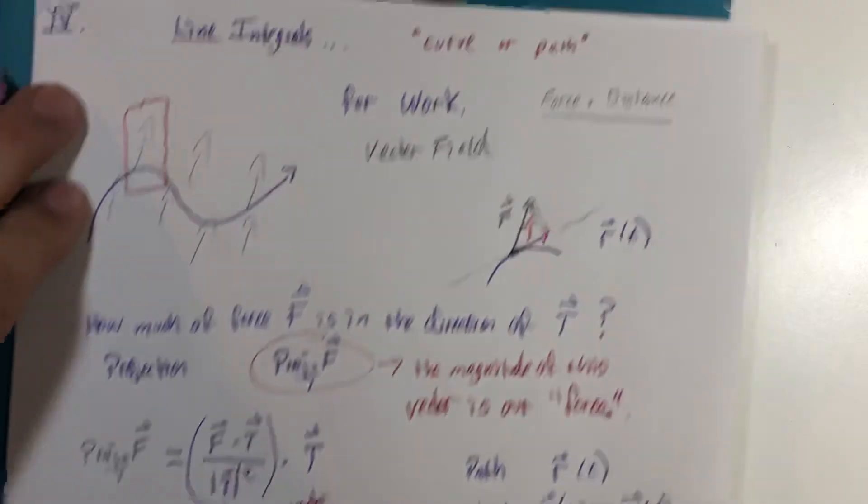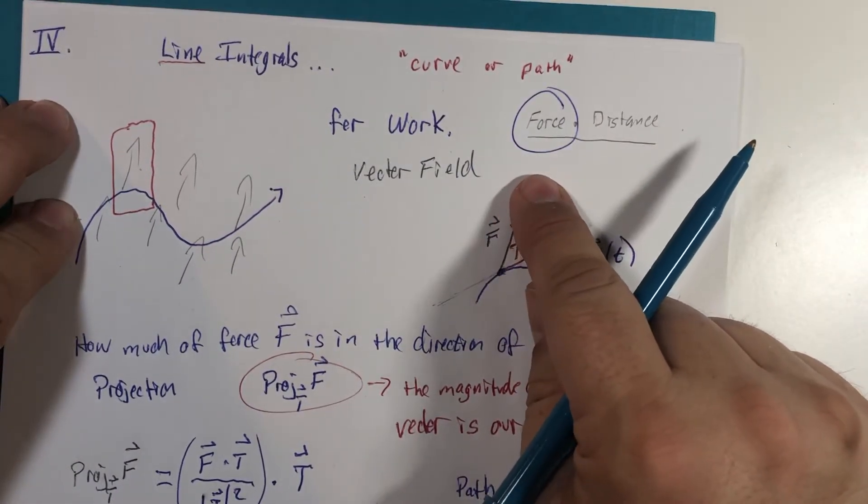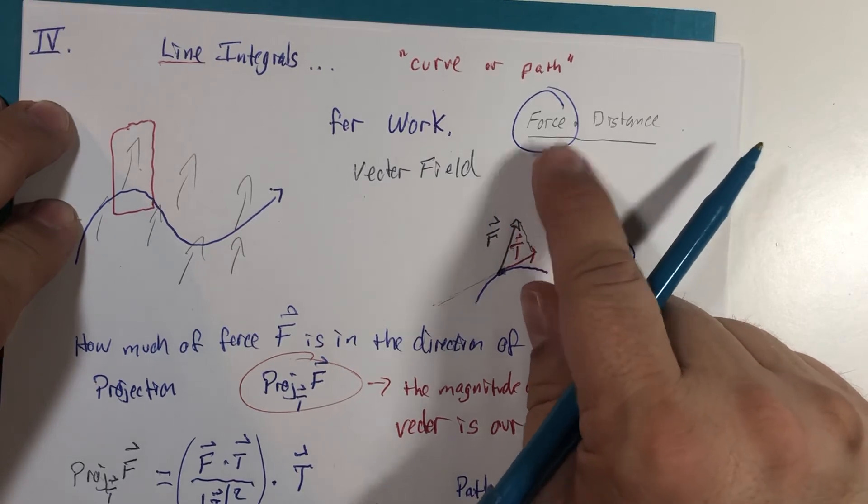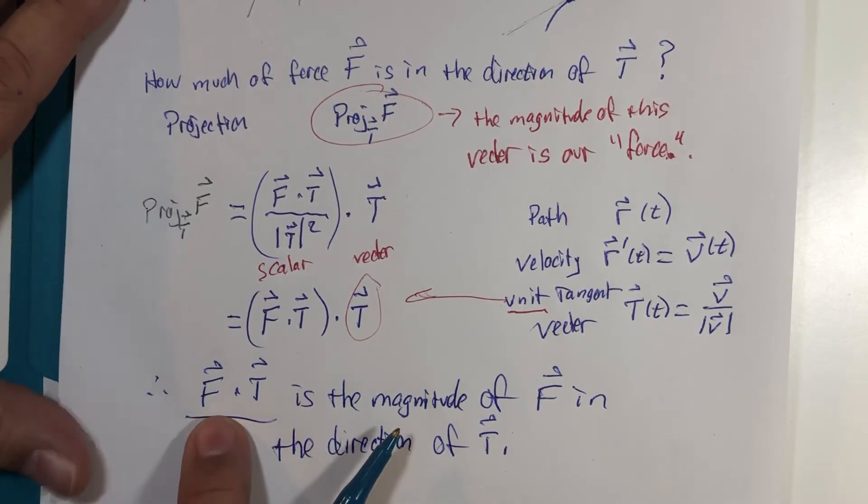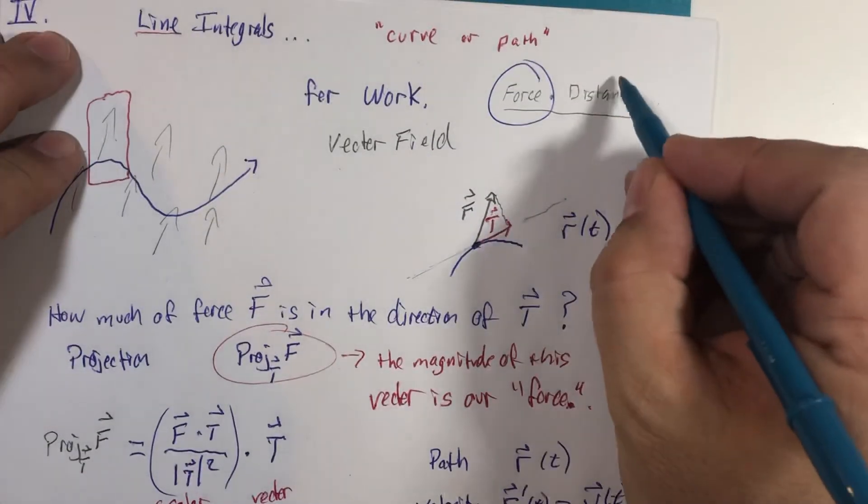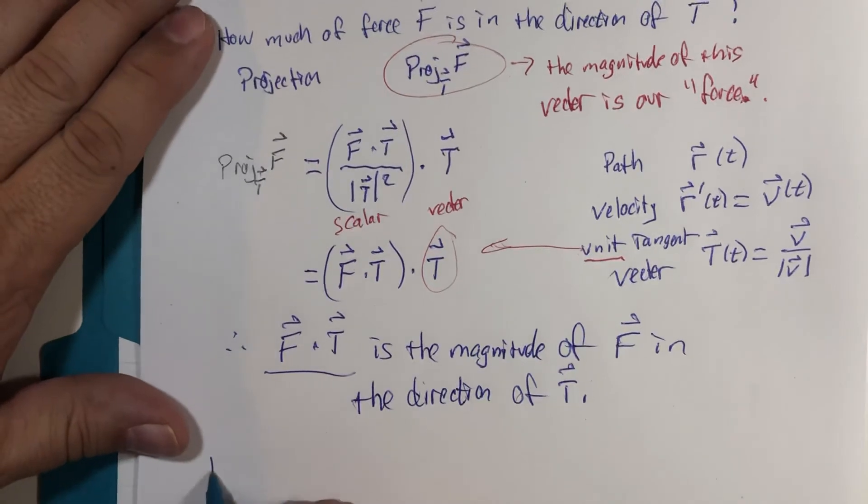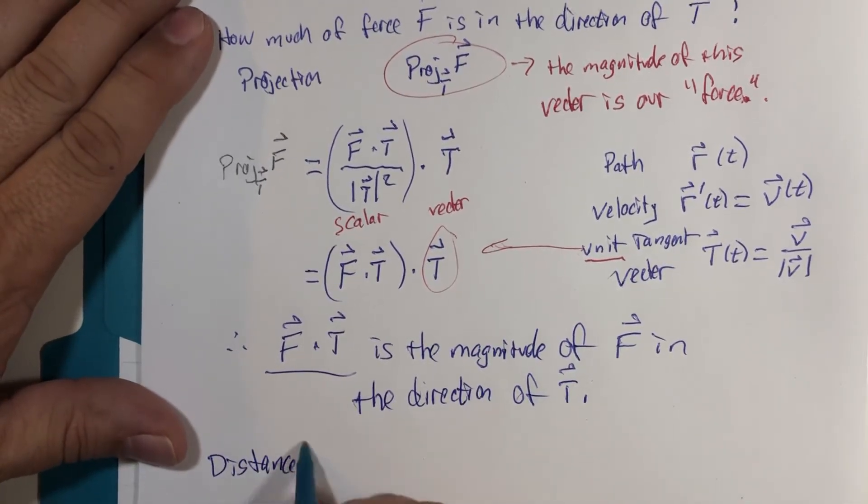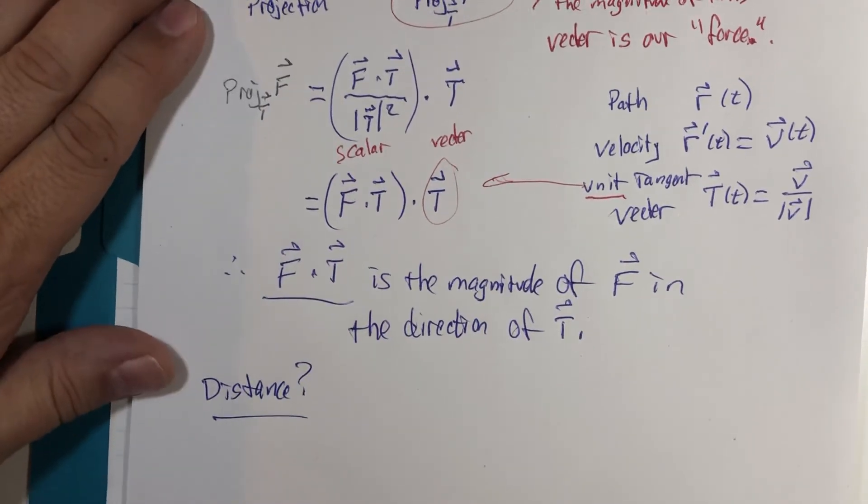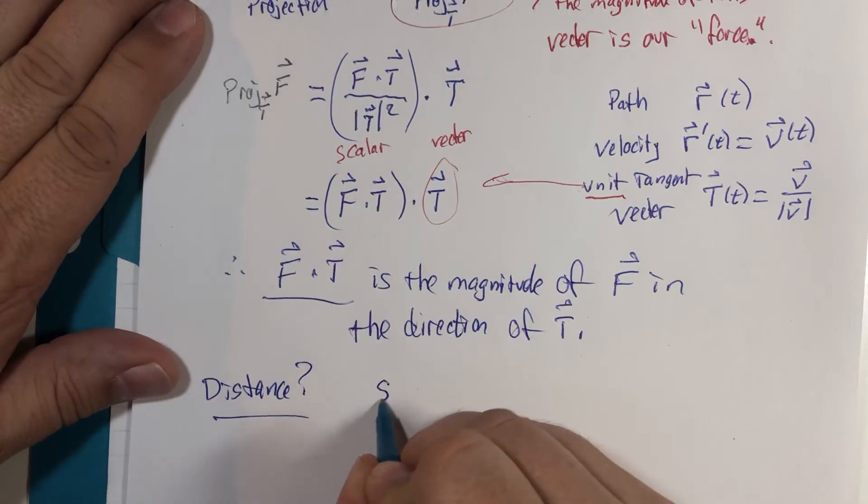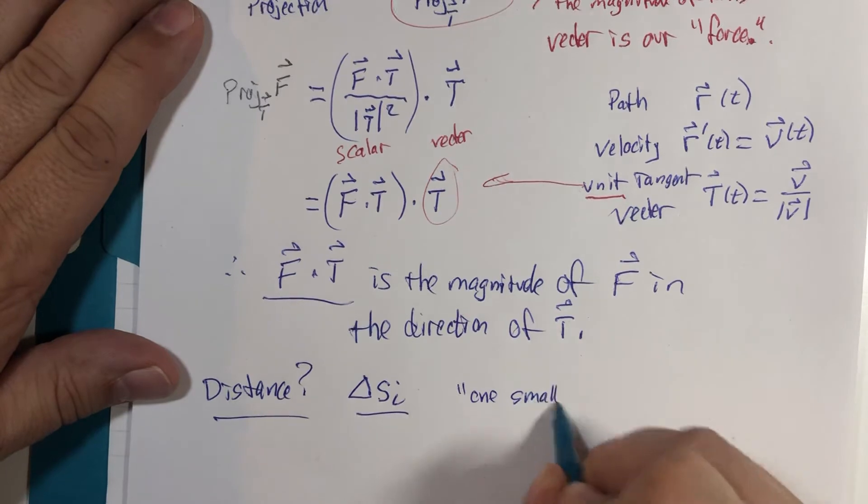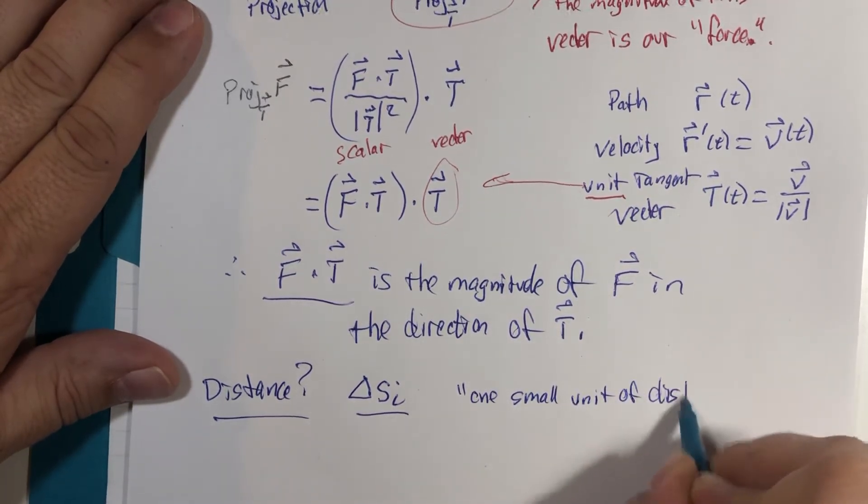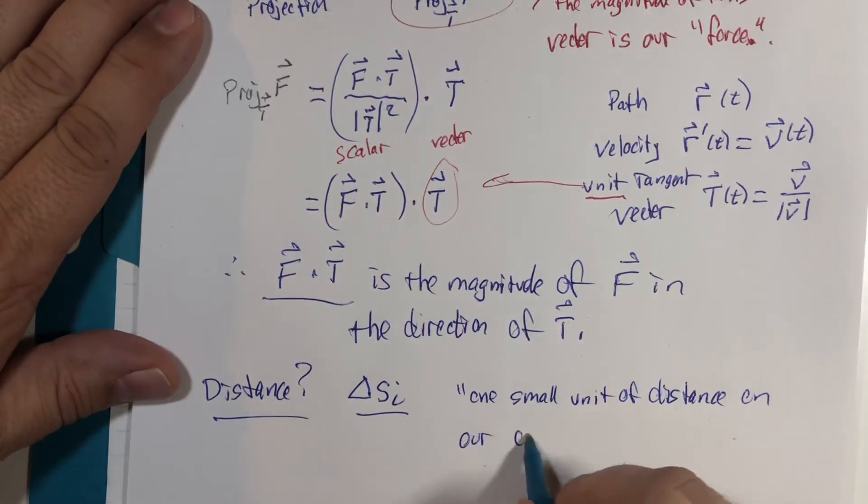Now, that means, let's go back up to the question at the beginning, I have this part of the calculation. I have how much force there is. Distance. It's the dot product of something I can calculate if I know the curve and something that I will be given, it turns out. Now, distance. We're going to call the distance a very small distance. Remember, S was our arc length. This would be one small unit of distance on our curve or path.